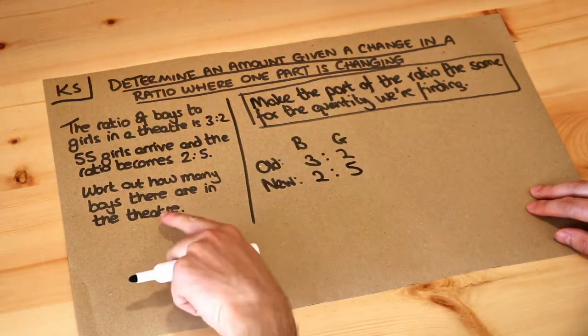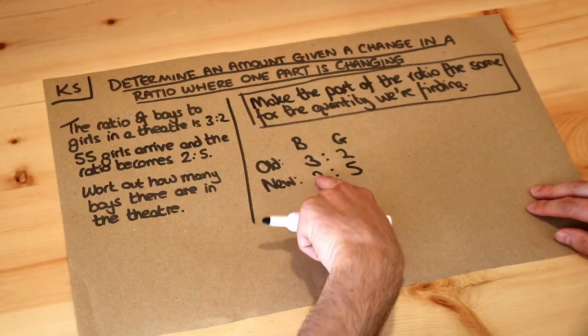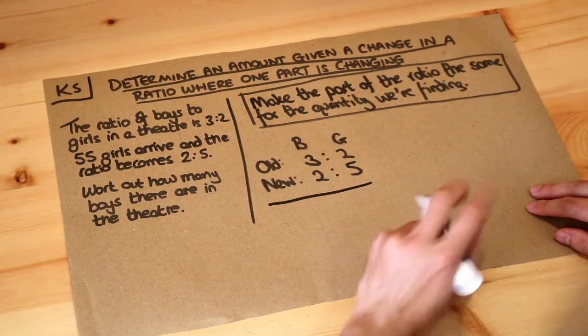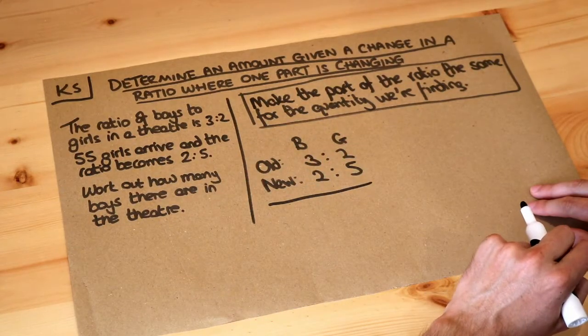So let's use this trick. We want to make the boy parts the same, so we want to make the 3 and the 2 the same. And we can do that by scaling each ratio individually.